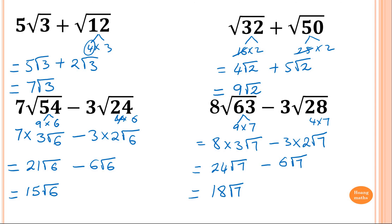Just follow this process: keep simplifying. If you can't think of a square number, do a factor tree if needed, or use a calculator and then look for the square number.